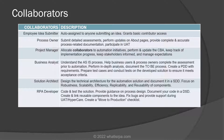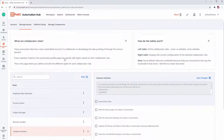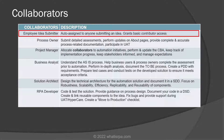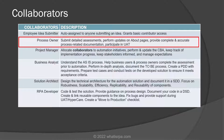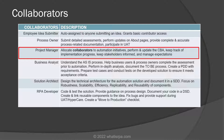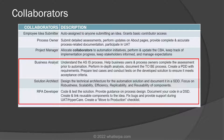Here are some definitions for collaborators, and again you don't have to memorize this because it does exist on the Automation Hub itself. The employee idea submitter is auto-assigned to anyone who submits an idea, and that grants the person basic contributor access. The process owner will take ideas submitted by standard users and supply detailed assessments, perform updates on about pages, provide process-related documentation, and participate in UAT. Project managers will allocate collaborators, perform and update the cost-benefit analysis, keep track of implementation progress, and keep stakeholders informed. The implementation roles — business analyst, solution architect, and RPA developer — are the folks that gather requirements, design the solution, and actually build it using UiPath Studio.